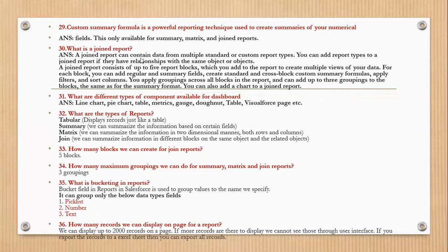What are joint reports? Joint reports can contain multiple standard and custom report types. You can add report types to a joint report if they have a relationship with the same object. Joint reports consist of up to five report blocks. For each block, you can add regular summary fields, create standard and cross-block custom summary formulas, add filters, and sort columns. You can apply groupings across all blocks in the report.